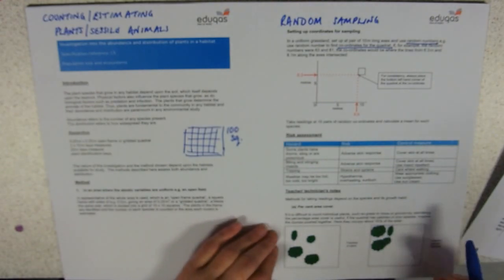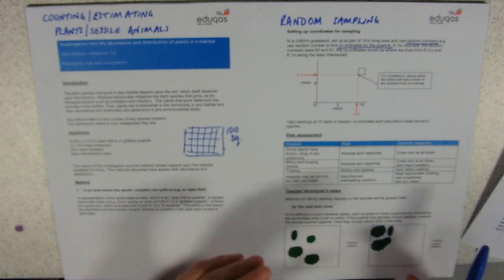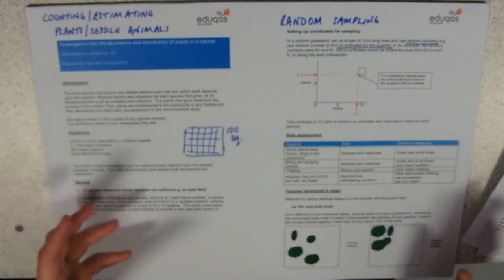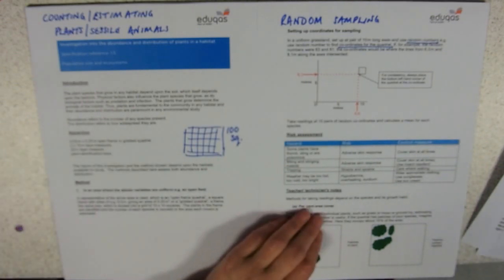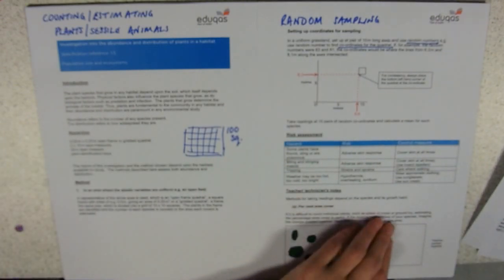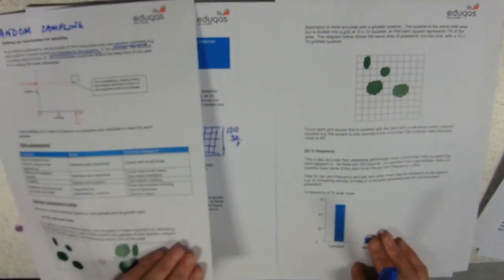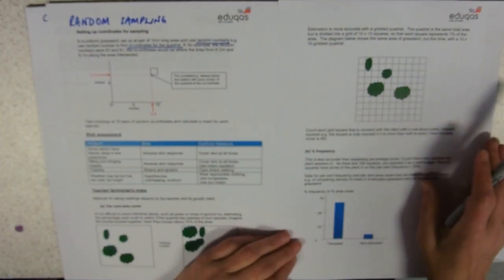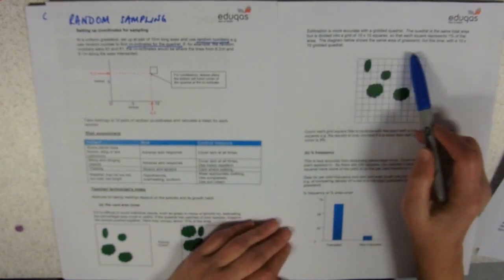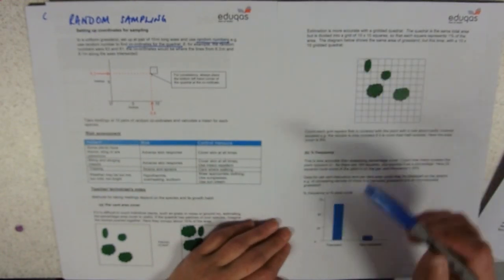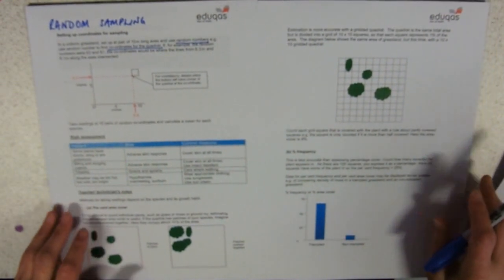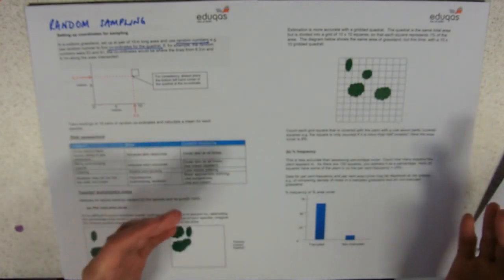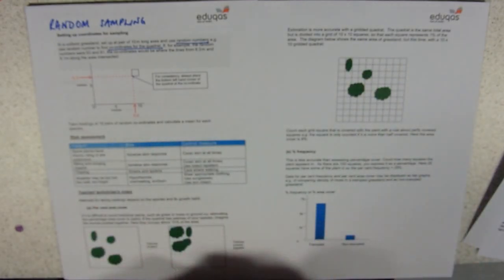For methods of taking readings, if you're doing something like a plantain or a dandelion, you might be able to count the number of plants in your quadrat. Here's my quadrat — I could count one, two, three, four plants. Or, with a grid of 10 by 10 squares, you wouldn't count every grass plant; you would count how many squares it covers and convert that into a percentage cover.